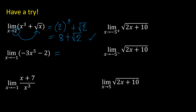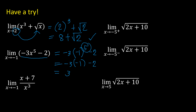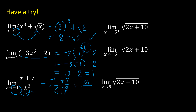Number 2: limit of negative 3x⁵ minus 2 as x approaches negative 5. This is a polynomial function, so use direct substitution: negative 3 times (−5)⁵ minus 2. Since (−5)⁵ gives a negative result — negative 3 times negative 1 (the sign factor) minus 2 — we get negative 3 times negative 1 equals positive 3, minus 2, so the answer is 1. For the next example, substituting negative 1 into x³ does not make the denominator 0, so substitute: negative 1 plus 7 over (−1)³ = 6 over negative 1 = negative 6.